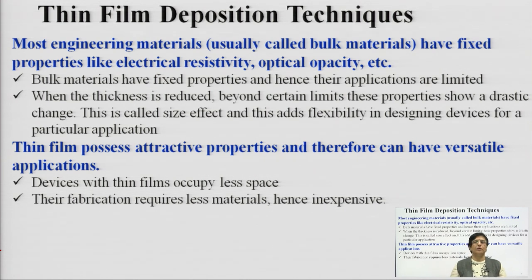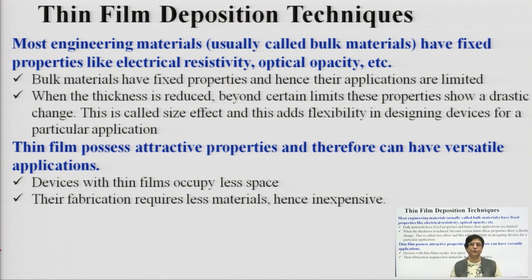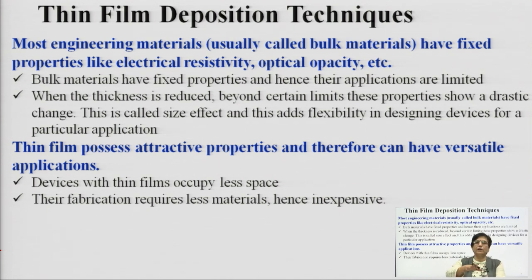What is this film deposition technique? In most engineering materials, bulk material has fixed properties like electrical resistivity and optical opacity. But when materials are in bulk form, their applications are limited. When size gets reduced beyond a certain dimension, their properties totally alter — that is why we have nanotechnology. For example, water in large quantity has a slippery tendency, but the same water in a small quantity has a sticking property.